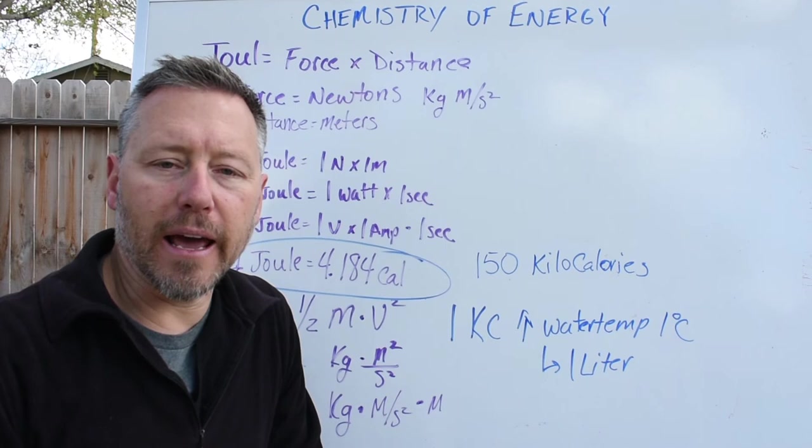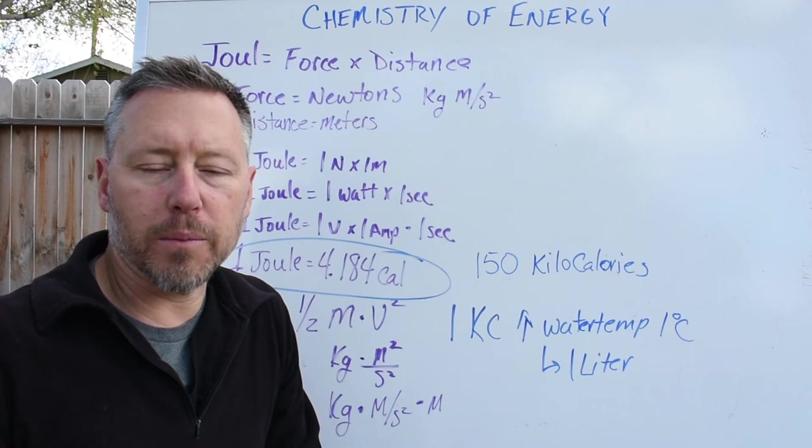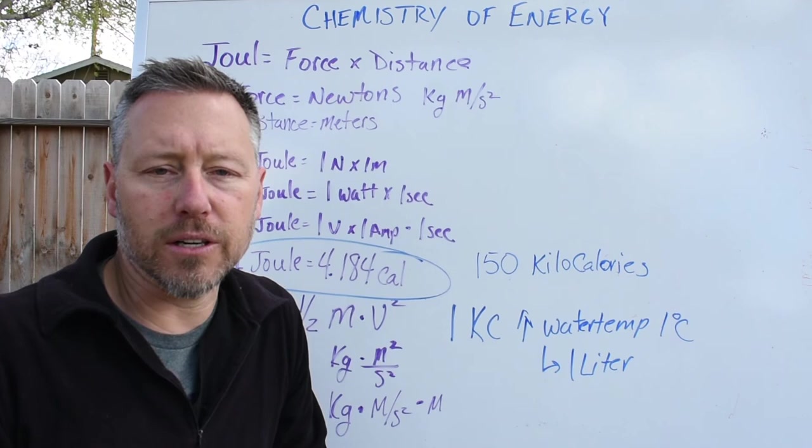Now if I have my oatmeal and it's 150 kilocalories, that means that it should either raise 150 liters of water by one degree Celsius, or I should be able to raise one liter of water by 150 degrees Celsius. It works either way. So you can see maybe where we might be going with these reactions and these calculations.